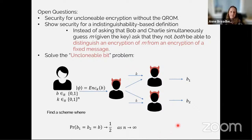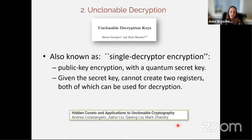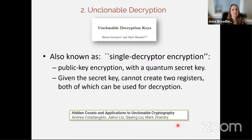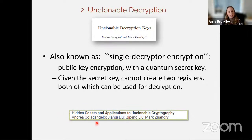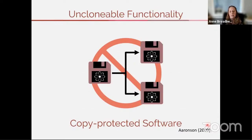I want to briefly mention a third application: unclonable decryption, also described as single-decryptor encryption. It's a public encryption scheme where the secret decryption key is quantum. We use the unclonability of the quantum decryption key to guarantee that there's only one person who can ever decrypt. Even with a single copy of the decryption key, it won't be possible to create two registers both usable for decryption. This is one of the applications of unclonable cryptography mentioned in a paper presented tomorrow.